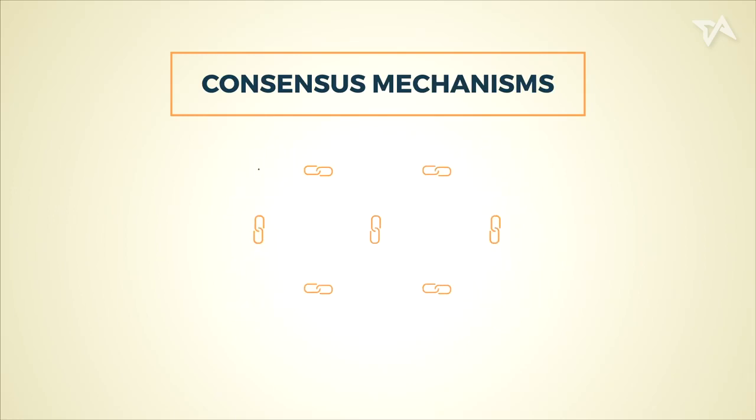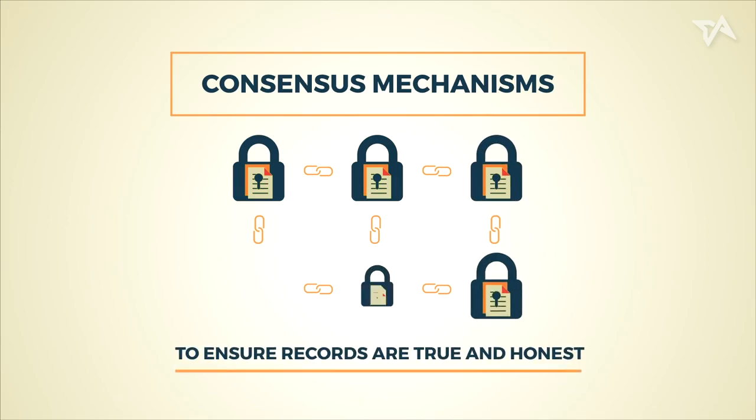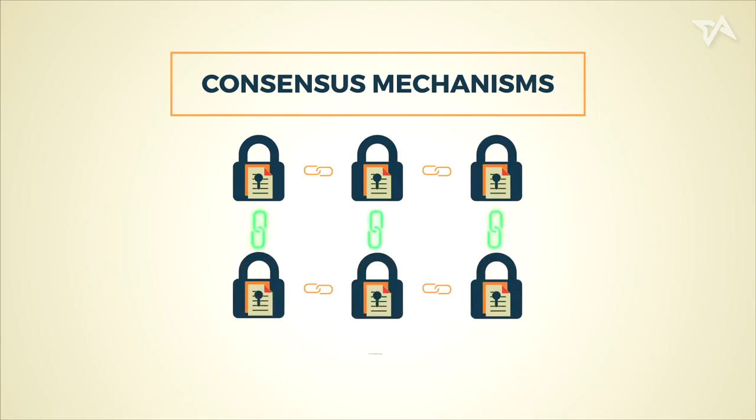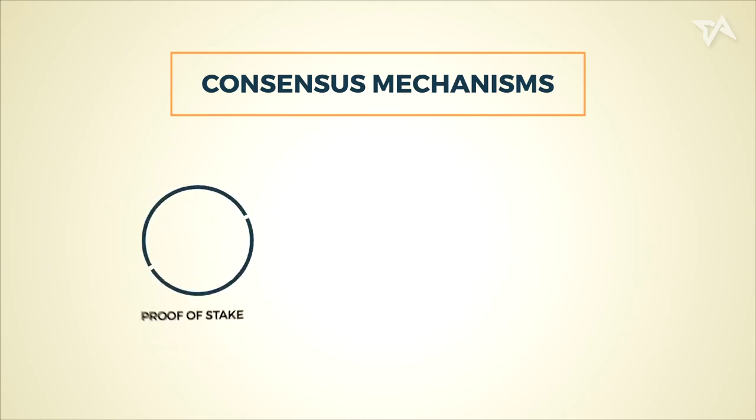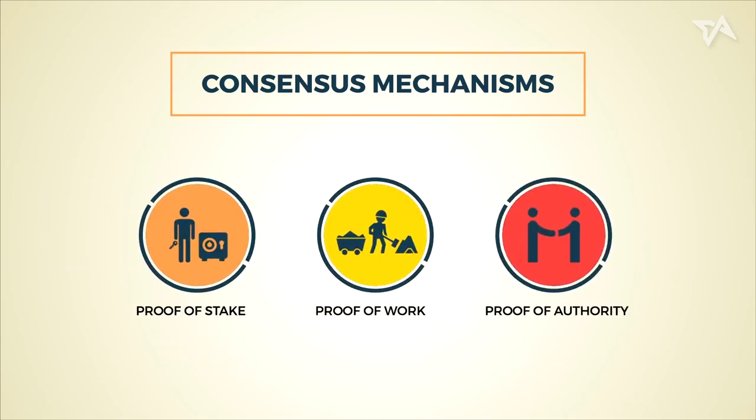There are various consensus mechanisms, but they all serve the same purpose: to ensure records are true and honest. The difference is the way the consensus is reached. Here, we will explore three types of consensus mechanisms.